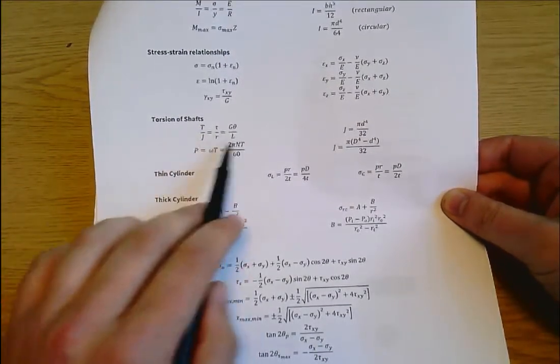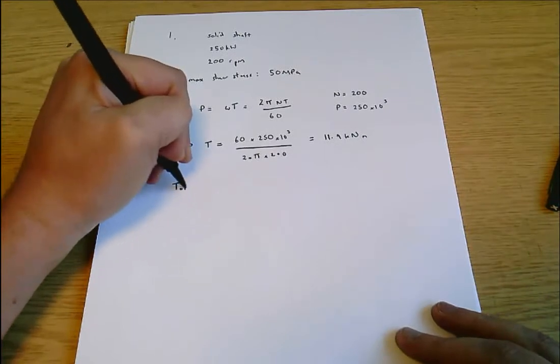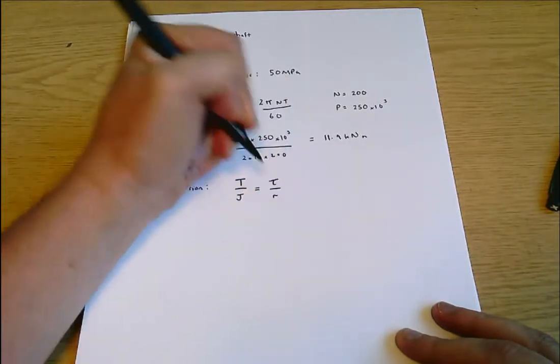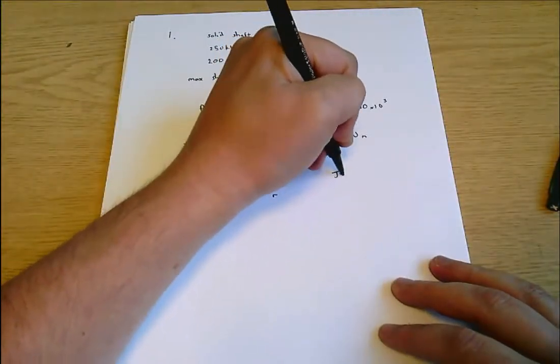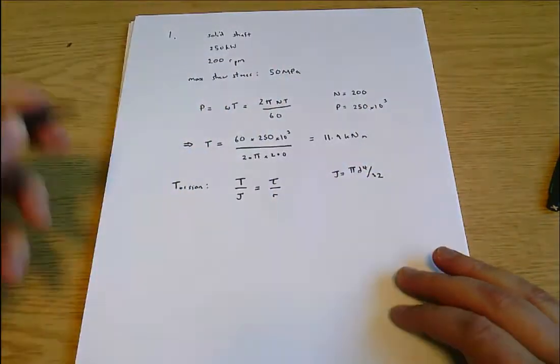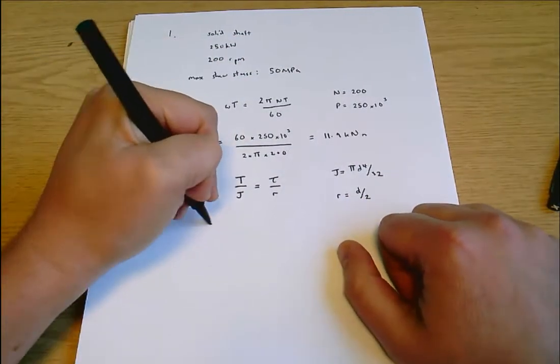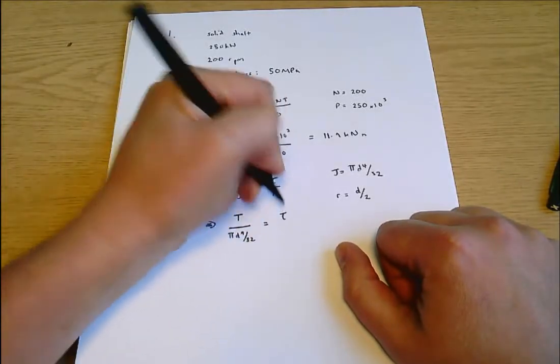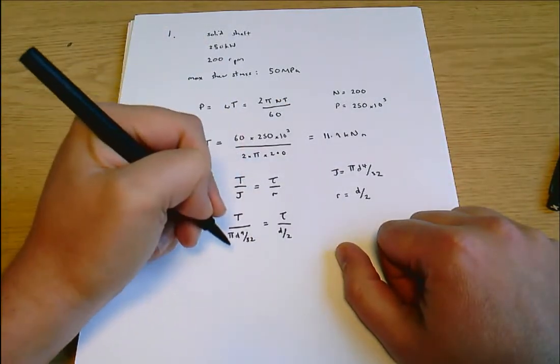These are three things all of which are equal so you can use any pair of them if you want to, but often we end up saying this is a torsion problem so therefore t over j equals τ over r. Now we need to think about what j equals - well that's on the data sheet, j equals π d to the 4 over 32. Since we're interested in diameters I'm just going to note that r equals d over 2.